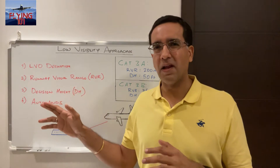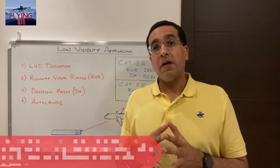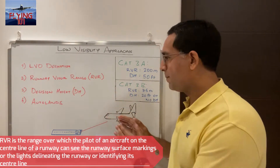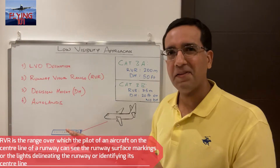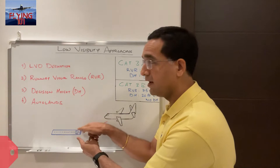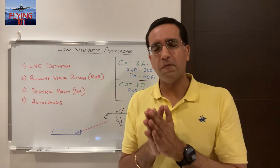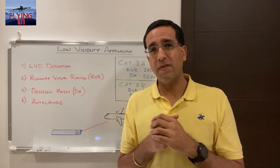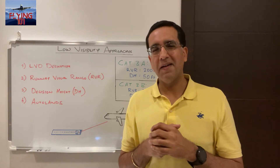The runway visual range, or RVR, is the range over which the pilot of an aircraft on the centerline of the runway can see the runway surface markings or the lights delineating the runway and the centerline. That is the definition of RVR. Now, RVR is different from the traditional visibility that would be reported at airports.